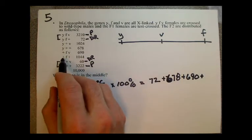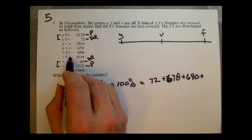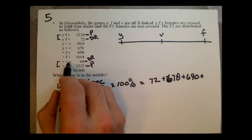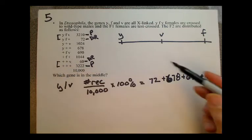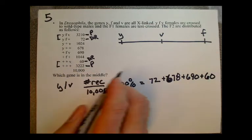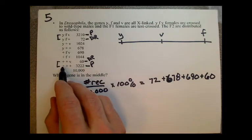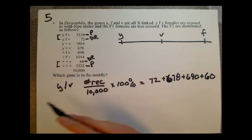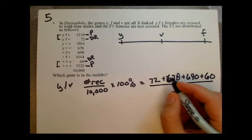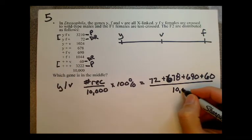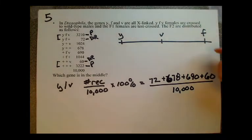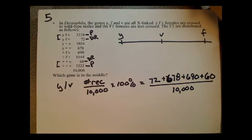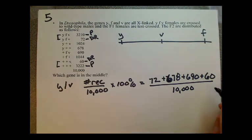Going down to this one, they're both still wild type. Here, Y and V have had a recombination event: 60. And here, this is one of the parentals — they're both wild type. So this number divided by 10,000 gives our map distance, which works out to be 15 centimorgans.